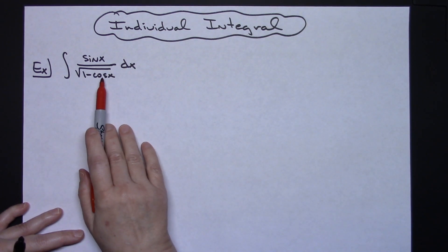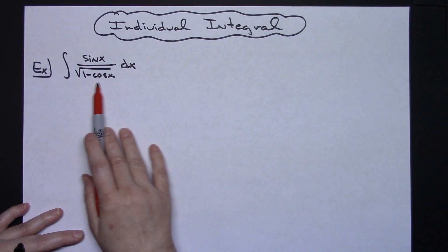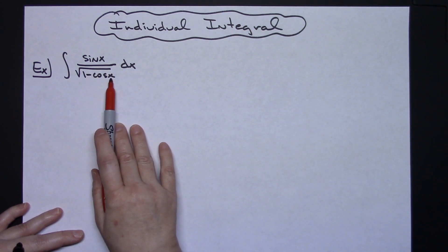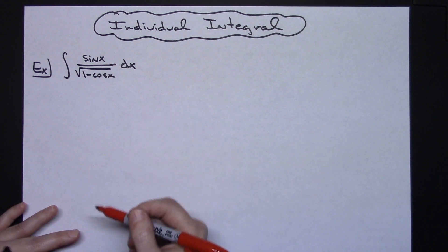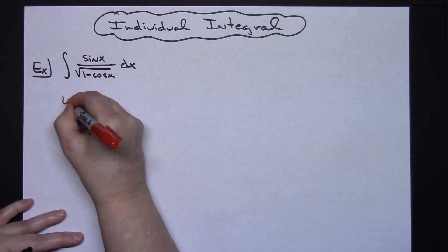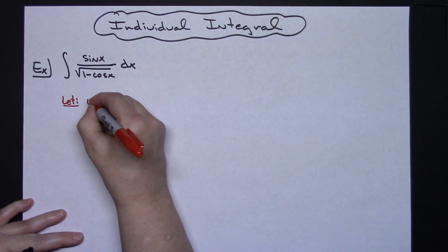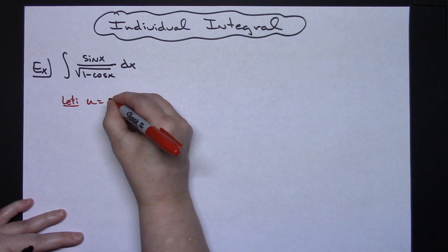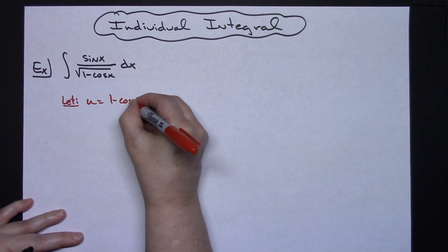So for a u-substitution I'm going to look for the inside part of any composite function that I might see there. In that denominator I've got the 1 minus cosine x on the inside of the radical. So that's where I'm going to start with letting u equal that. So u is going to be equal to 1 minus cosine x.